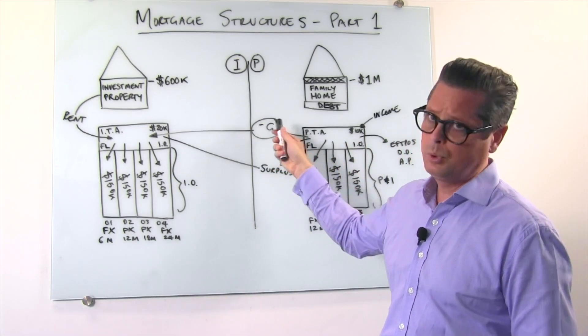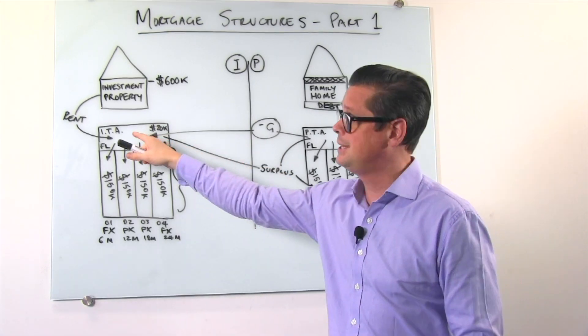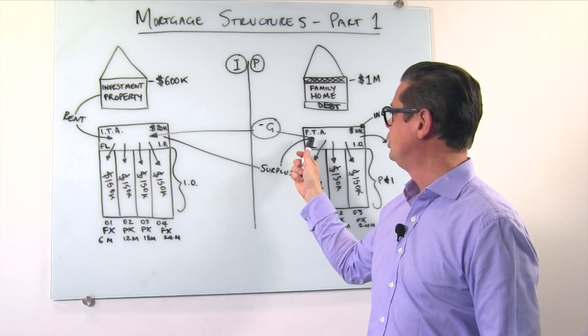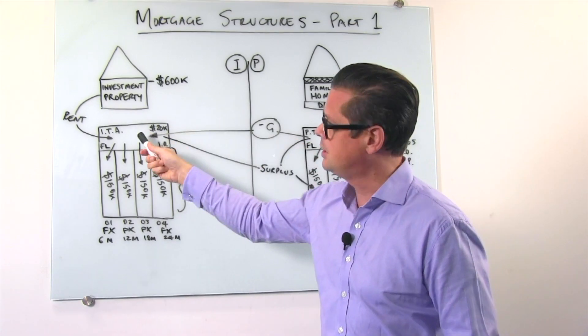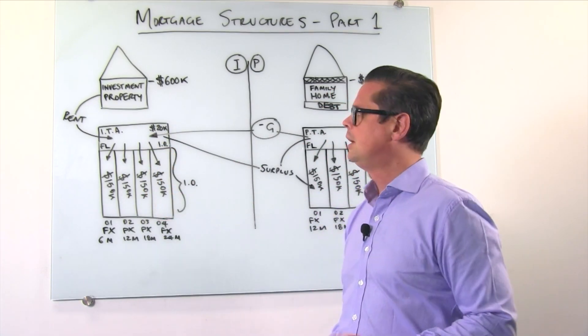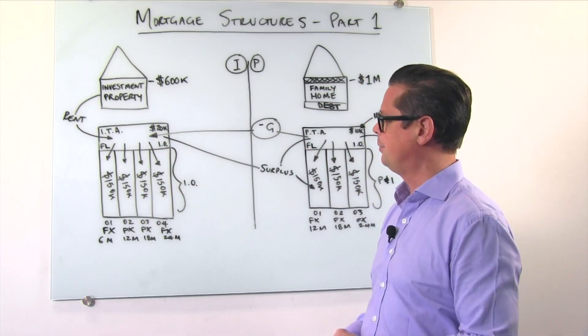This symbol here is just referring to if this was a negatively geared property, you'd be sending across from here to here, those weekly top-ups as a negatively geared property.